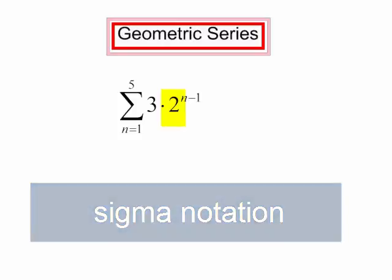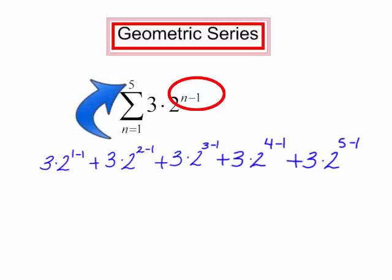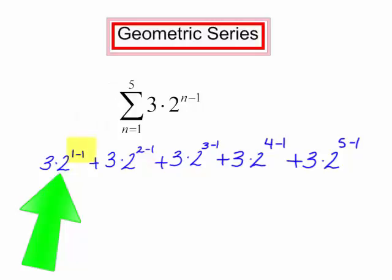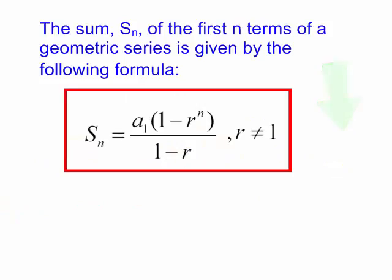The common ratio is 2, so I will simply replace this in with the numbers 1 through 5. You can see that I had 3 times 2 to the 1 minus 1, plus 3 times 2 to the 2 minus 1, and I went up to 5. If I simplify this I will get the same numbers I had before. I also have a formula to find the sum of the first n terms of a geometric series.